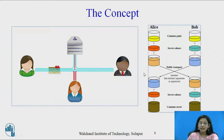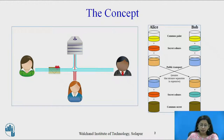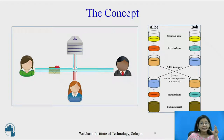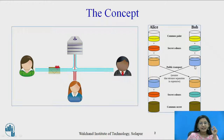Diffie-Hellman key exchange establishes a shared secret between two parties that can be used for secret communication for exchanging data over a public network. The exchange of a secret key is a particular achievement of Diffie-Hellman key exchange, and the analogy is explained with the help of a color example instead of a number example.